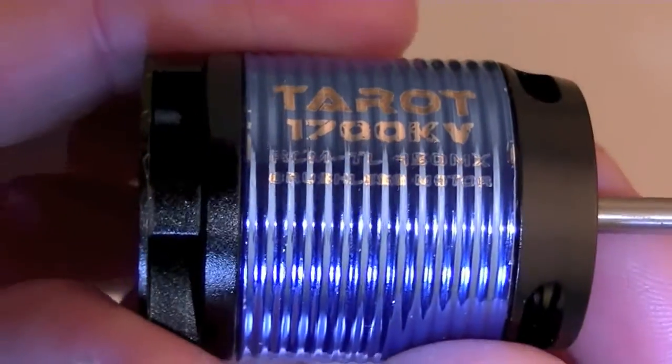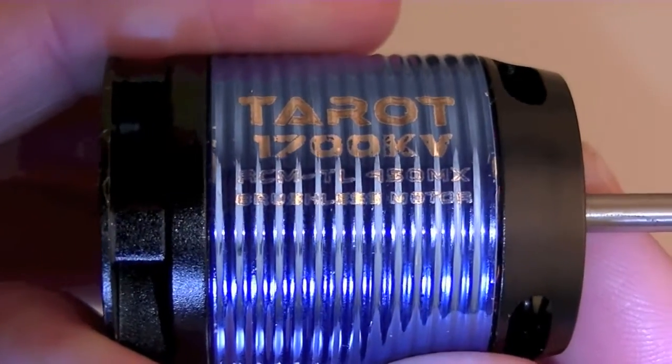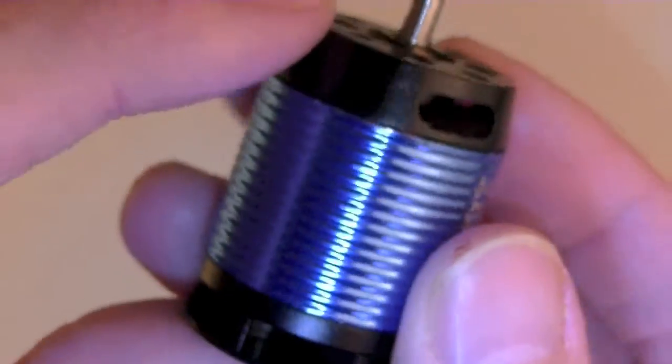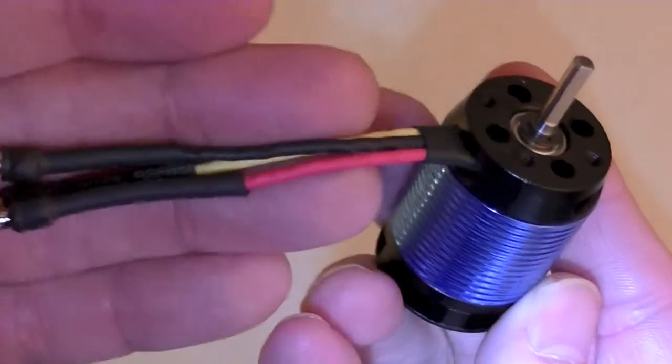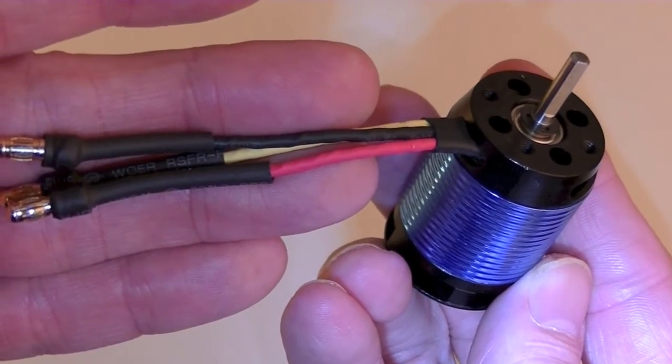With that said, this is it. The Taro 1700 KV 450 MX motor designed for a 6S 450 heli build and I think it's going to work great. Thanks for watching and I'll catch you on the next one.